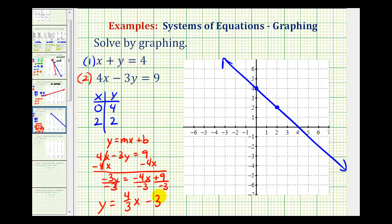Now we'll plot the y-intercept of negative three, and then use the slope of four-thirds to find another point on the line. Here's the y-intercept. Now we'll go up four and right three. We'll go up four and right three.